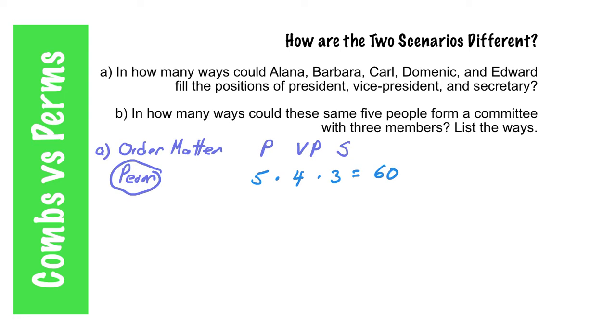In letter B, it's slightly different. In how many ways could these same five people form a committee with three members? And we're actually going to list the ways just to demonstrate how these are different. And I'll just label them A, B, C. So we've got five people, A, B, C, D, and E. So from those five people, how many ways can we form a committee?